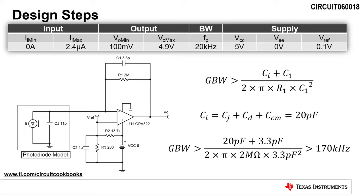Using these equations, we calculate that the gain bandwidth of the op-amp must be greater than 170 kilohertz to ensure the amplifier is stable. The gain bandwidth of the OPA322 is 20 megahertz, so this requirement is met.